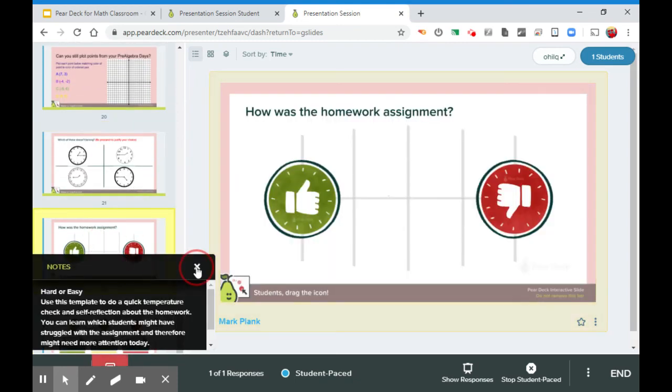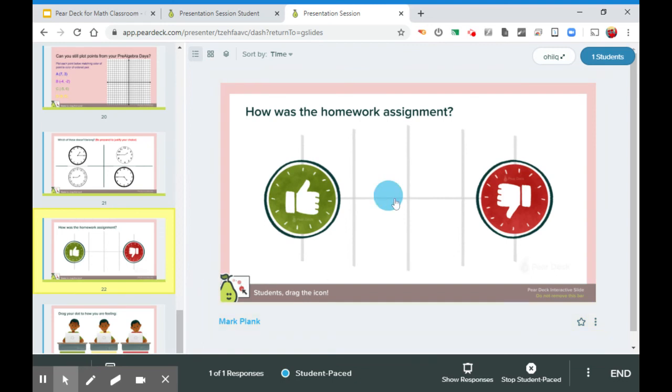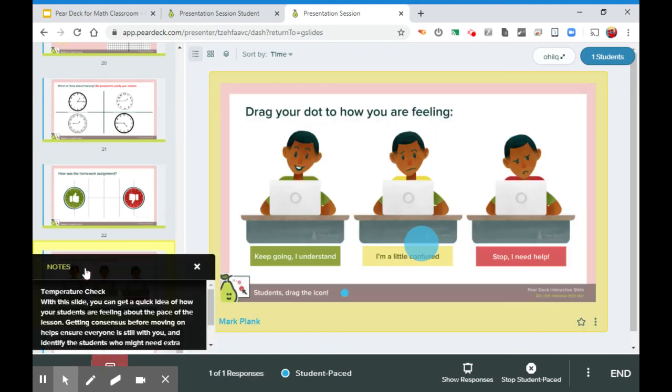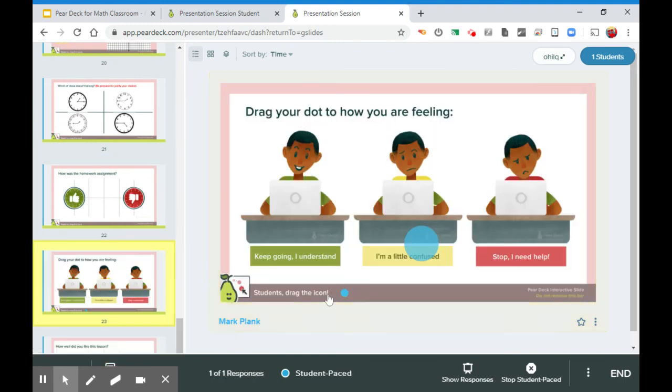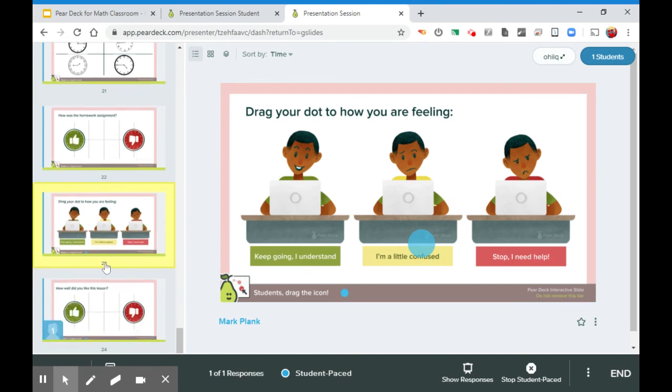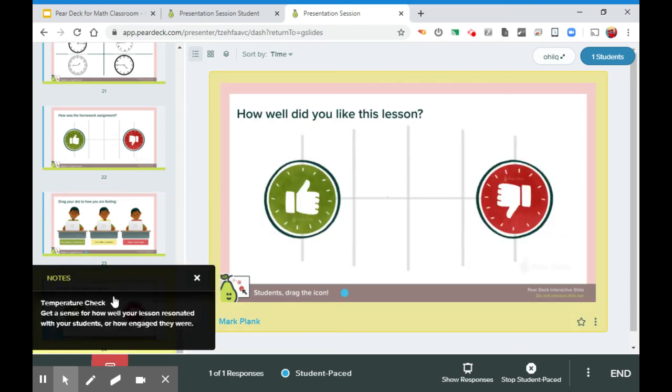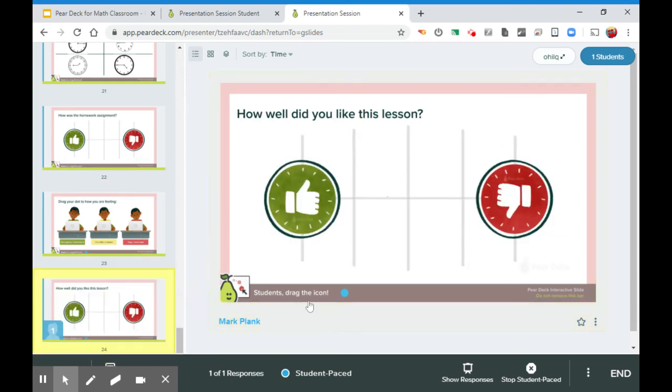How is the homework? There's our one vote, but you can imagine seeing these all over the place. And you can share these with the class so they can kind of see where everyone else was in the class if you want to share with the entire class. I'm a little confused, but you'd see how many dots are keep going, how many are a little confused, how many are stop I need help. And you can decide what to make a decision how you want to move forward in a live classroom environment. And then finally, how did you like the lesson?